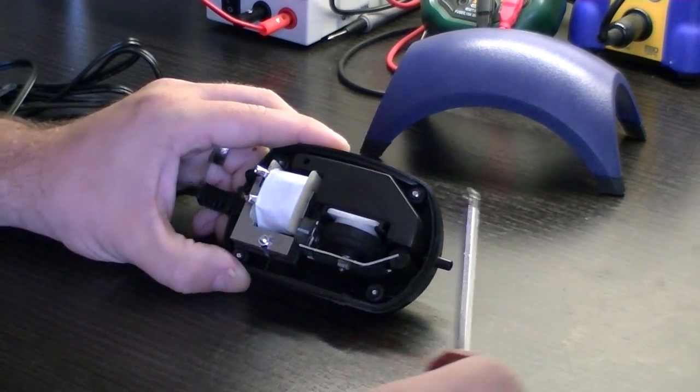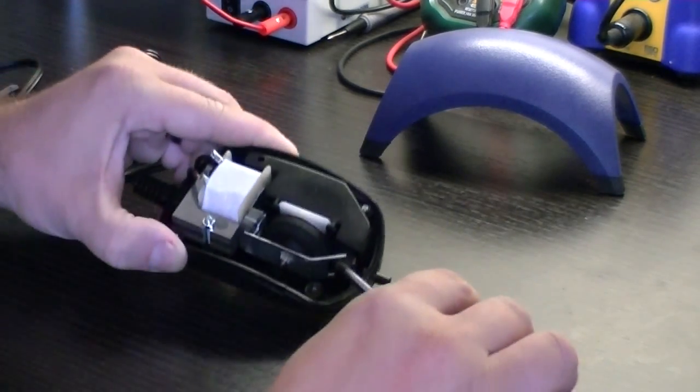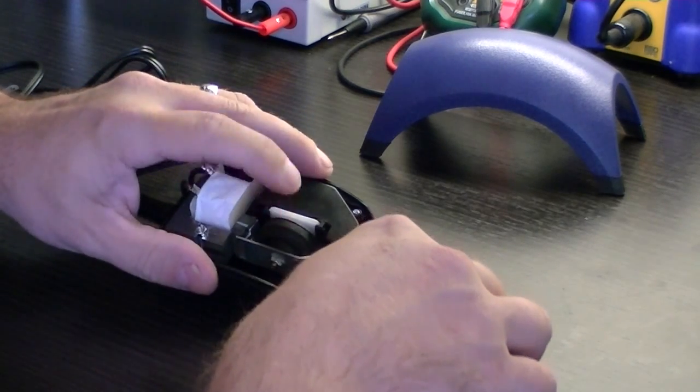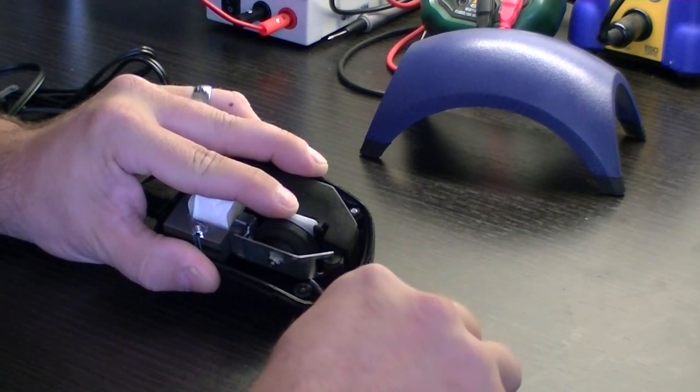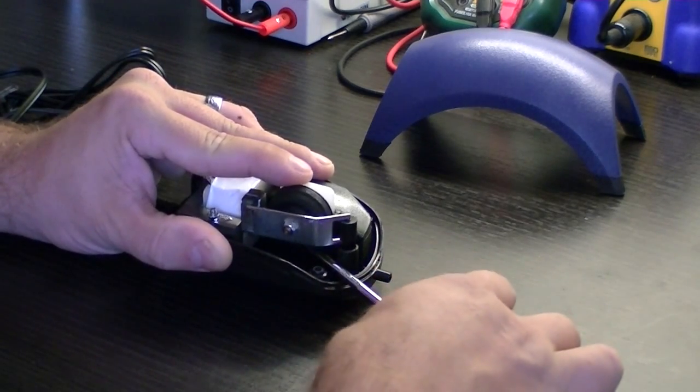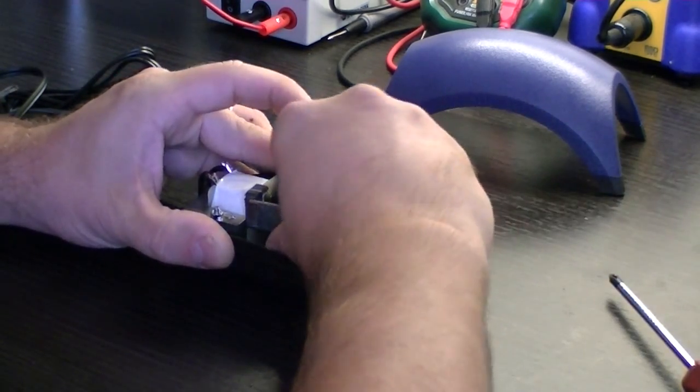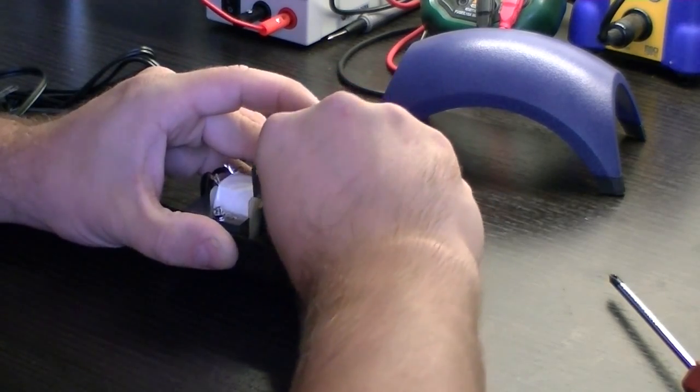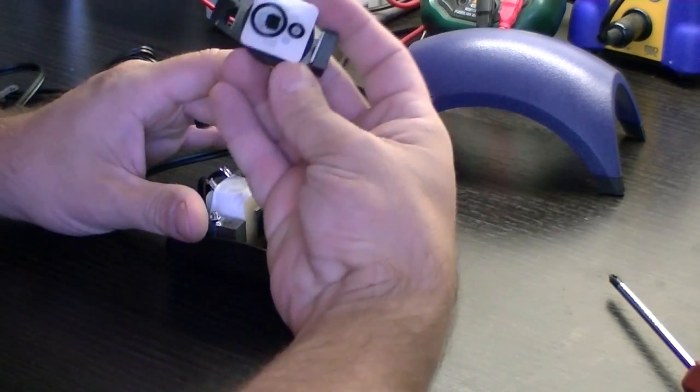The only thing you have to do is very gently get underneath the unit, underneath this white piece here, and pry the whole thing up nice and slowly until it releases. The whole unit comes out.